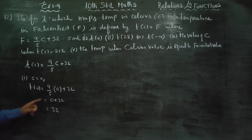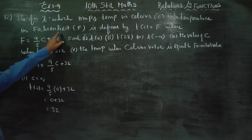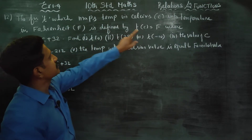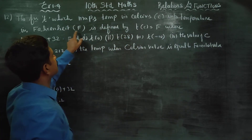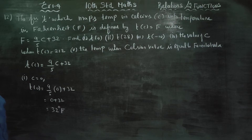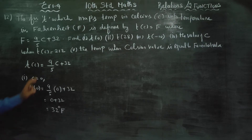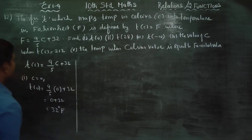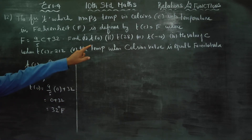Actually, it is Fahrenheit — why do we say Fahrenheit? Because F is equal to Fahrenheit. After the first subdivision, we move to the second subdivision: T of 28.